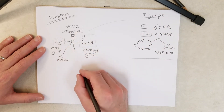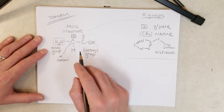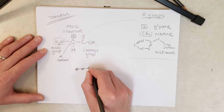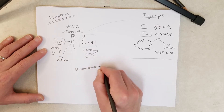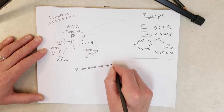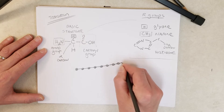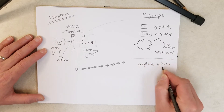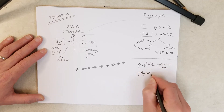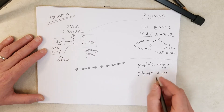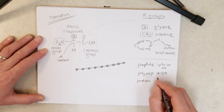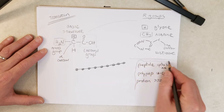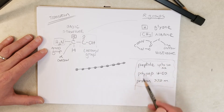If we link amino acids together, we can think of each as a little bead. A chain of amino acids can be called a peptide (up to about 10 amino acids), a polypeptide (roughly 11 to 50 amino acids), or a protein (more than 50 amino acids). Generally, these terms are used somewhat interchangeably — they all refer to chains of amino acids.